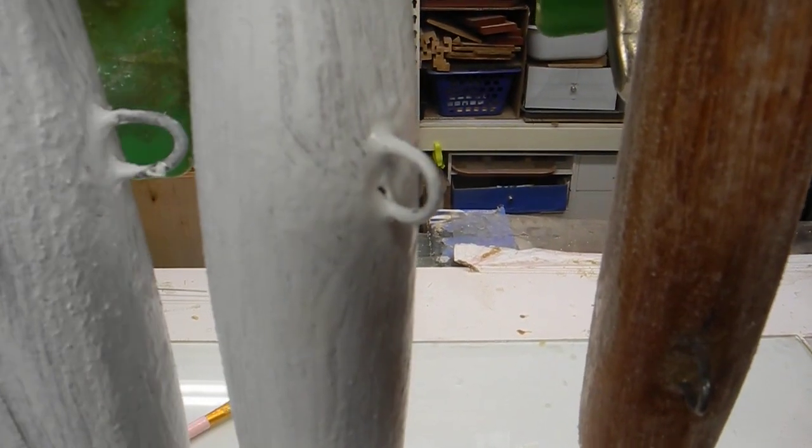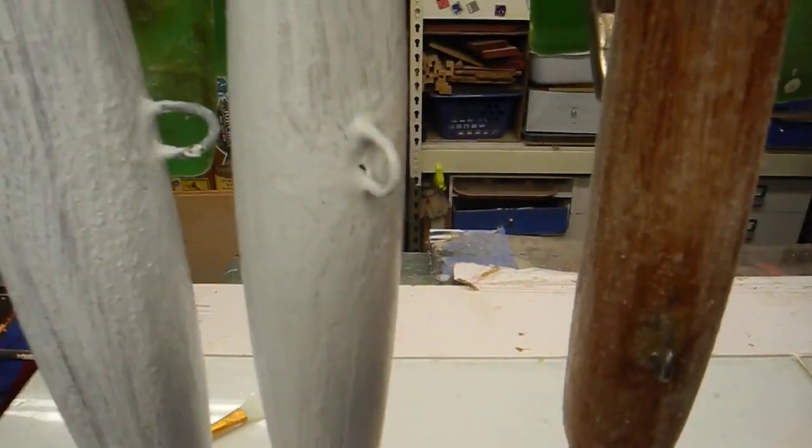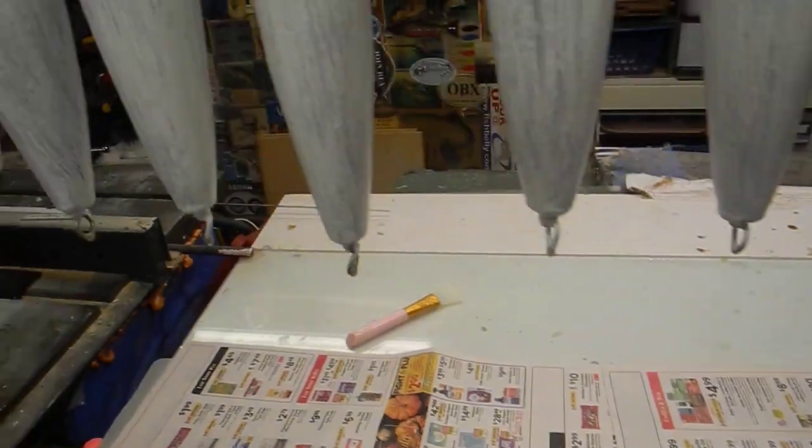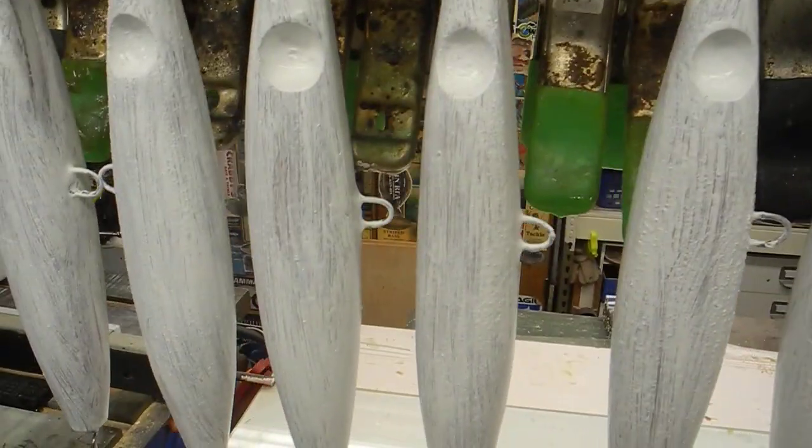You can see that little pinhole right there on the hanger, and I'll have to fix that because that's going to be a hole. What happens when you prime it, it will show all the spots that got missed. I'll show you on the second coat.